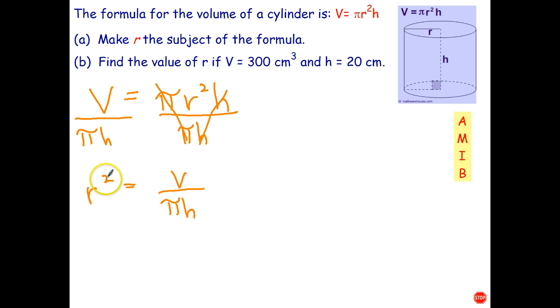Now how do we get rid of the squared? Well, the opposite of squaring something is to take the square root, and again I have to do it to both sides and I have to do it to the entire side. So put the square root over everything. Square root and squaring cancel each other out. And my equation is r = √(V/(πh)).